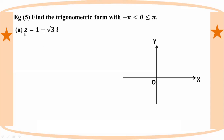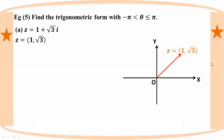Number 1: z equal to 1 plus root 3i. The coordinate point is (1, root 3).